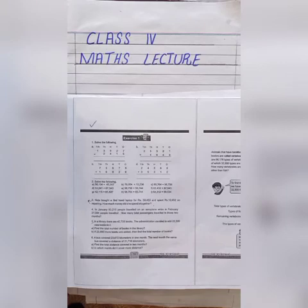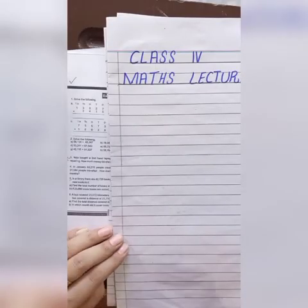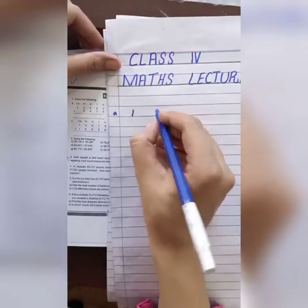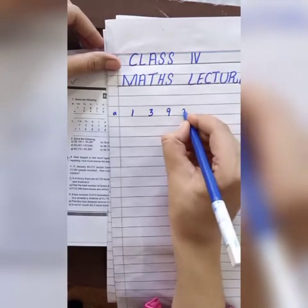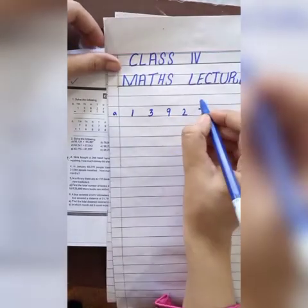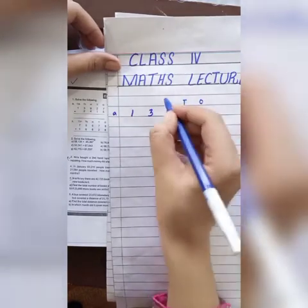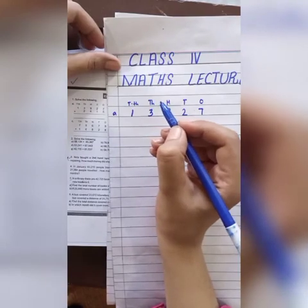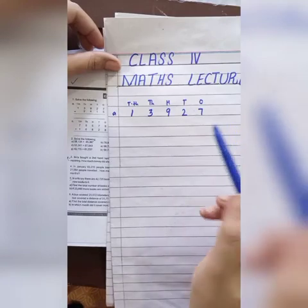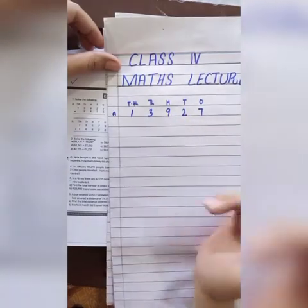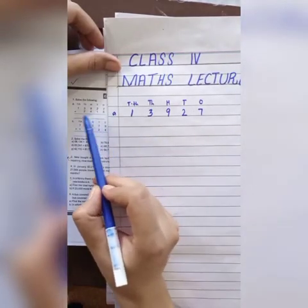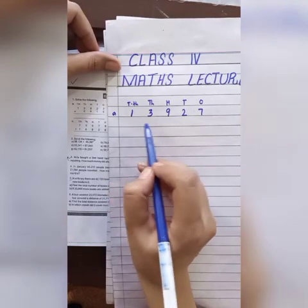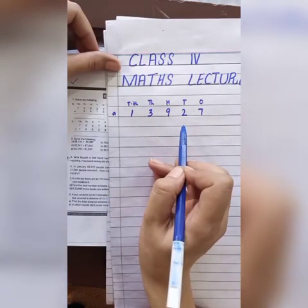We will discuss the first question, which is 13927. Write down the place values: one, ten, hundred, thousand, ten thousand. Place value is really important.